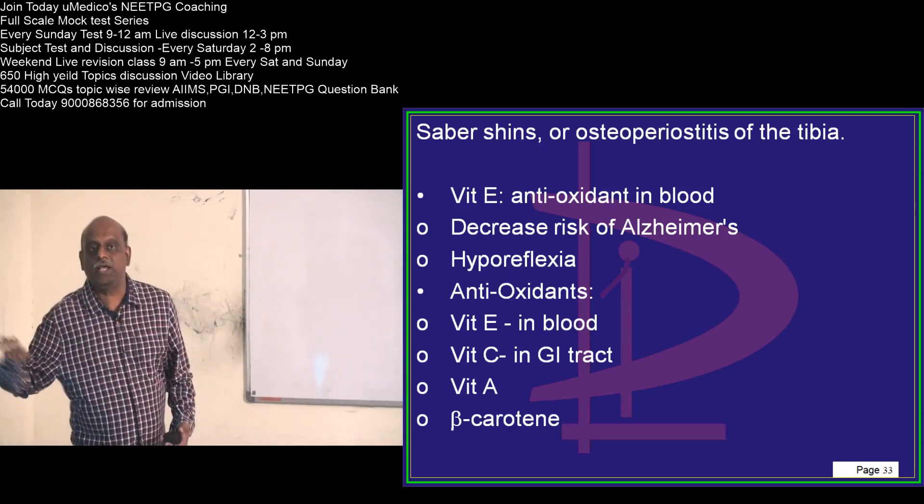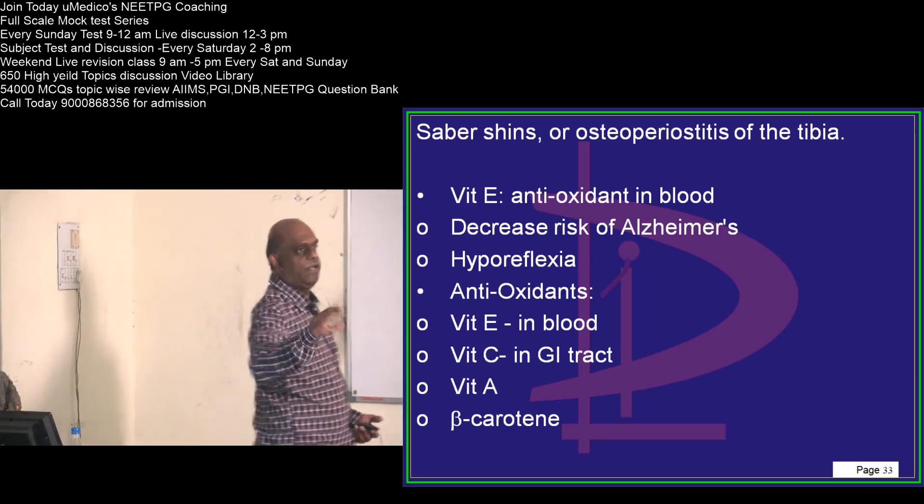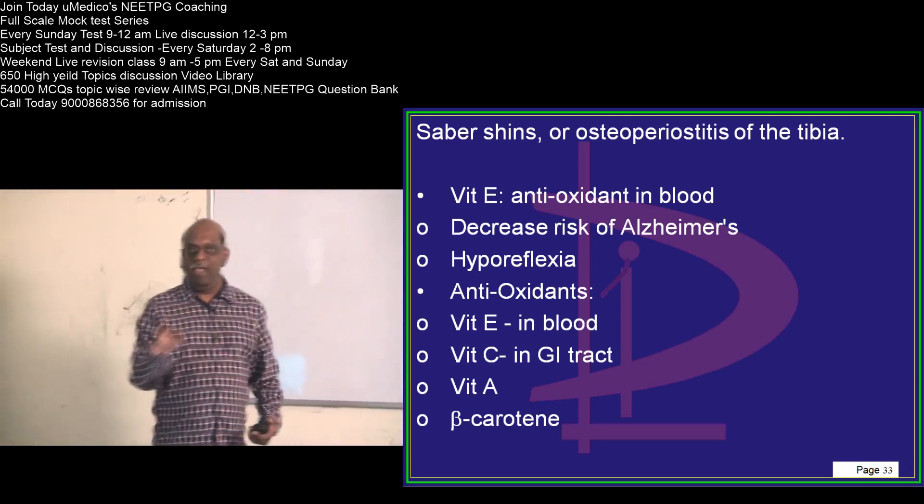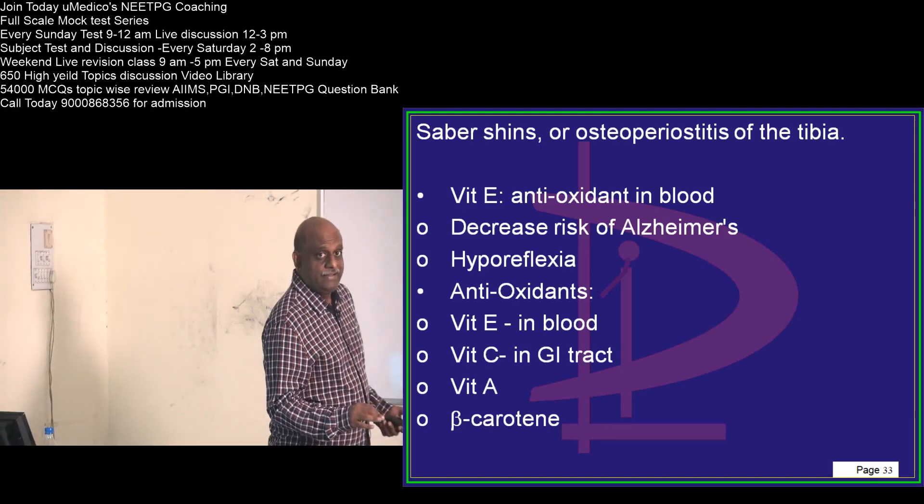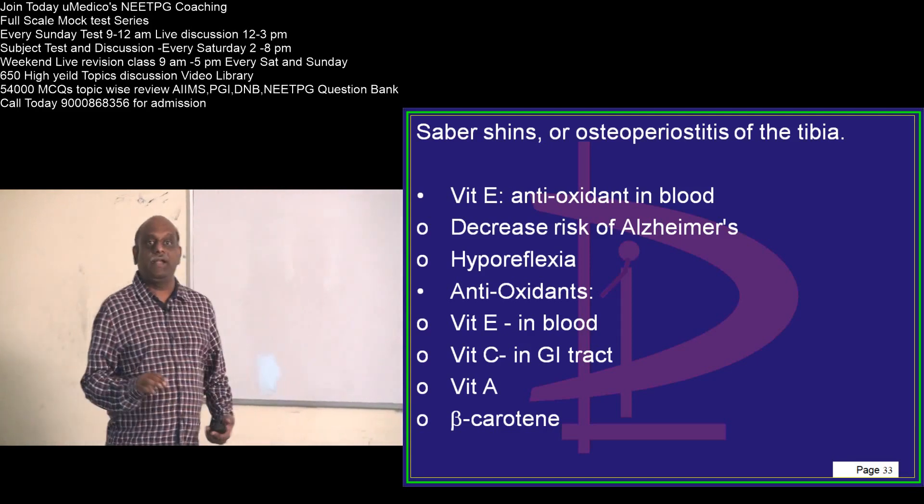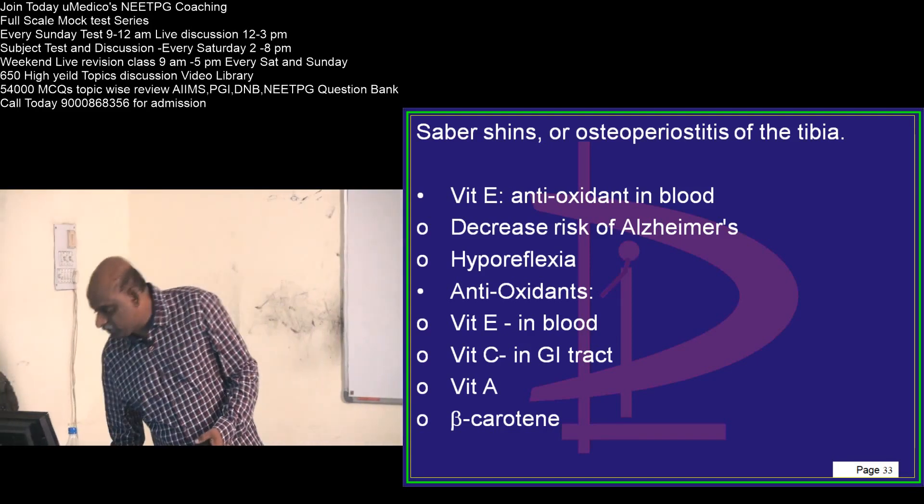And what are all the vitamins which are called antioxidants? One of the favorite questions any exam you go. Vitamin E is the antioxidant in the blood. Vitamin C is the antioxidant in the gut. Then vitamin A is antioxidant. Beta carotene is antioxidant, is what I want to underscore to all of you.